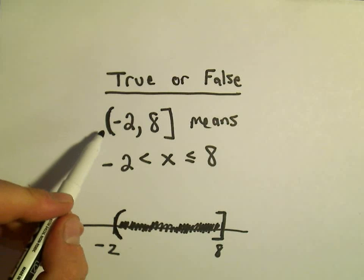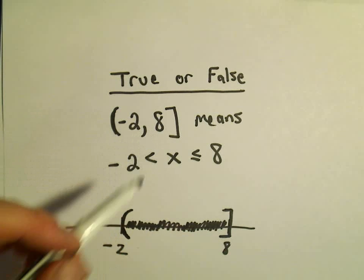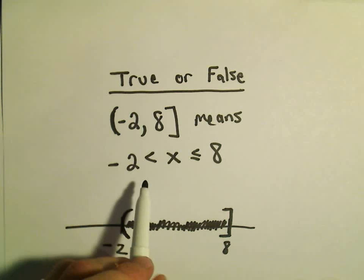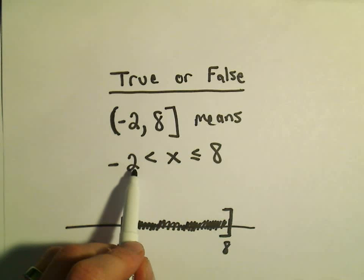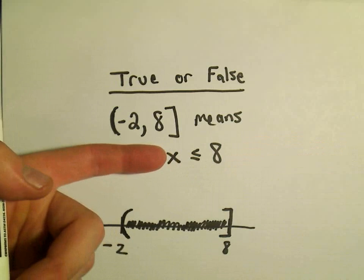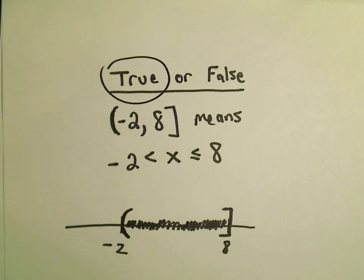So yes, to me this interval notation from negative 2 with parentheses up to 8 with a bracket, that does mean use every value of x that's strictly greater than negative 2. So x has to be greater than negative 2, and x also has to be less than or equal to 8. So I would say yes, that's definitely a true statement. Again, I just wanted to show you the little bit. Thank you.